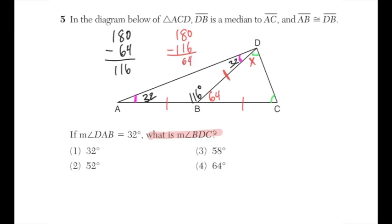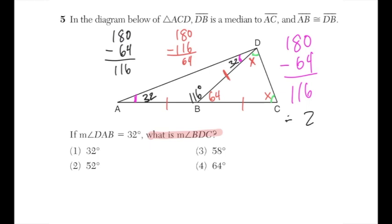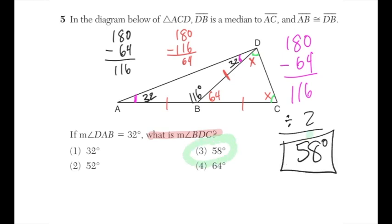Now for angle BDC: triangle BDC is isosceles with angle DBC = 64°. The two base angles BDC and BCD are equal, so they sum to 180 − 64 = 116°. Dividing by two gives 58 degrees. That is option number three.